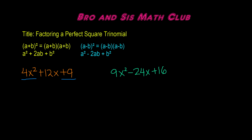Now let's go ahead and factor. When we factor, we're going to have two binomials. Since this is a perfect square trinomial, the binomials are going to be the same. The first step is to find the square root of the first term. The square root of 4x² is 2x, so 2x times 2x: 2 times 2 gives us 4, and x times x gives us x², because x to the power of 1 times x to the power of 1 gives you x².